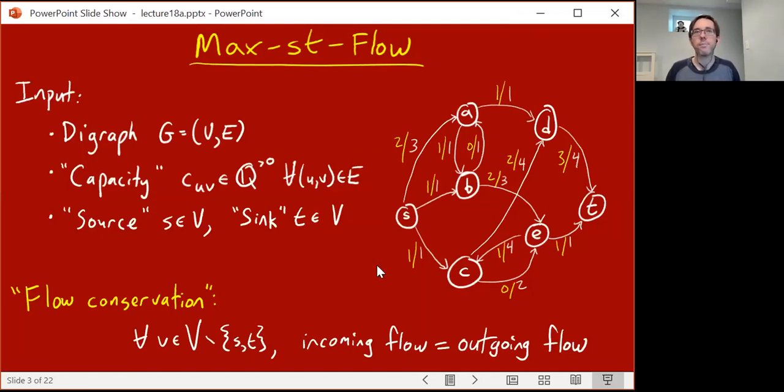You're naturally trying to ship as much stuff out as you can. It turns out these yellow numbers I've written here is the optimal solution for this specific instance. You see s ships out two units to a, one unit to b, and one unit to c. A gets two incoming units from s and ships one out to d and one out to b. B gets one incoming unit from s and one from a, and ships zero out to a and two out to e. At every vertex, the amount of yellow coming in is the same as the amount going out, except at s and t. S is shipping out four, and t is getting in four. This is the optimal solution, so the max-st-flow here is four.